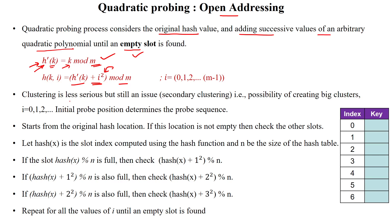Clustering is less serious in quadratic probing, but there is still the possibility of secondary clustering. Secondary clustering means there is a possibility of creating big-sized clusters. In linear probing, small clusters are created, but here big clusters are possible because we are using a quadratic term.